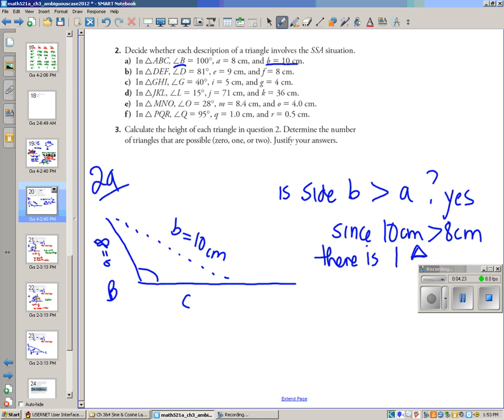So since 10 centimeters is bigger than 8 centimeters, there is one triangle. And you've drawn it. Is that all it asks for? How do you know there's not another one? Because the only way you could touch with that 10 centimeters, it would be if it went this way, right? It's got to swing this way, but it can't touch that line. It's got to touch that line.